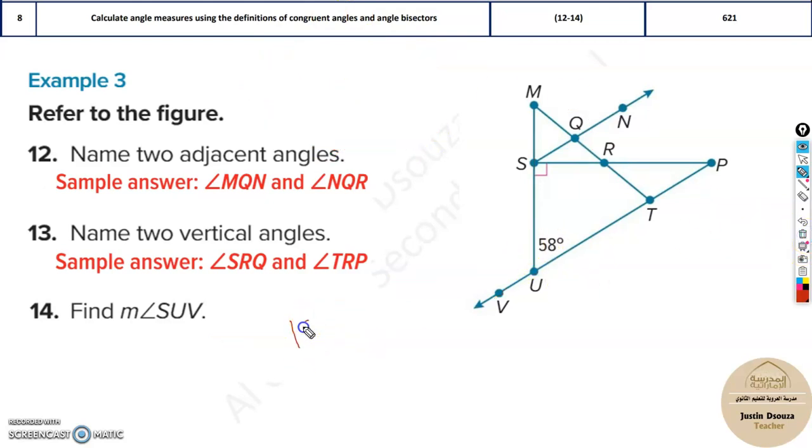So that is the thing. Now here we have one angle. We know 180 is the total angle. Minus 58 would be the answer. So it would be 120 plus 2. 122 would be the answer.